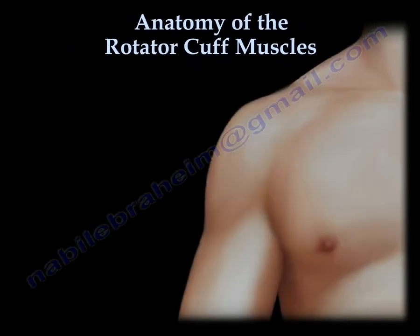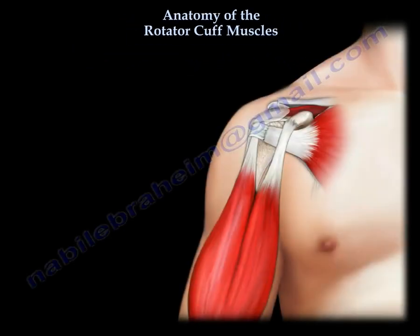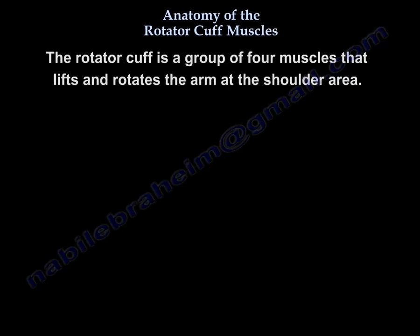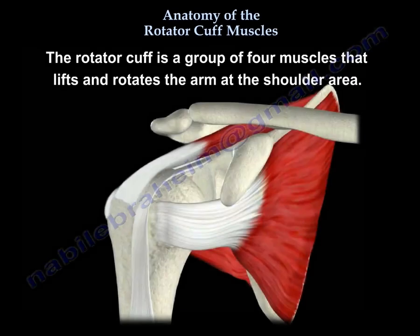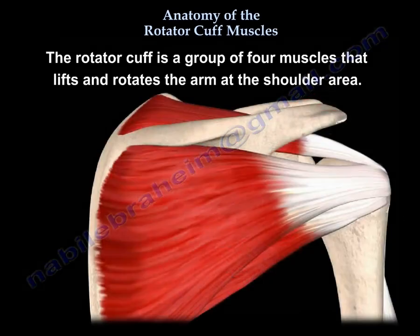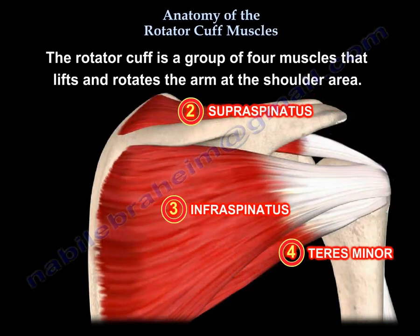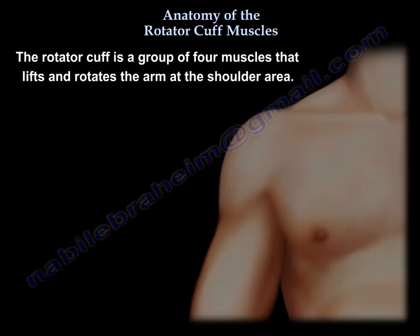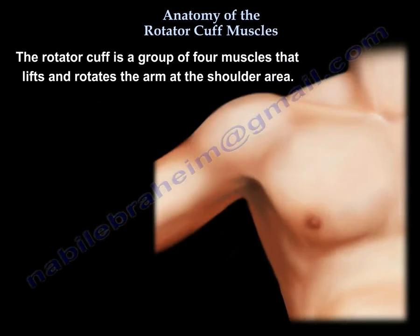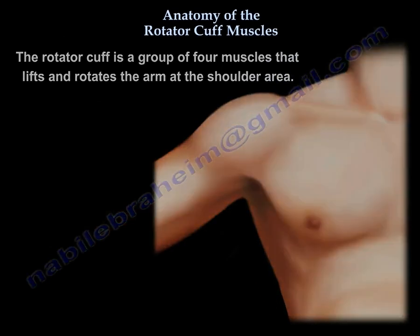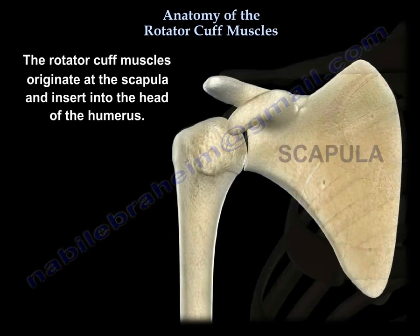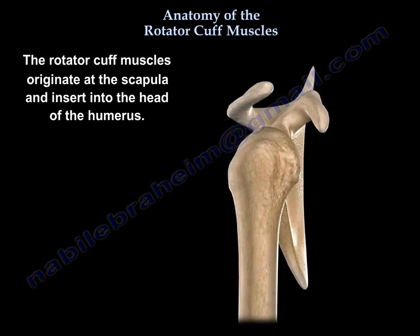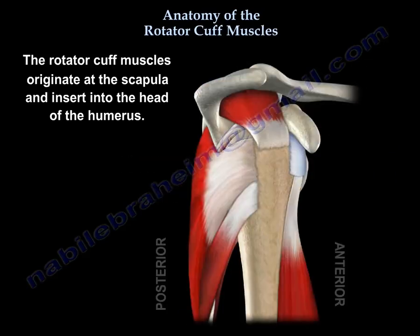The rotator cuff is a group of four muscles that lifts and rotates the arm at the shoulder area. The muscles originate at the scapula and insert at the head of the humerus.